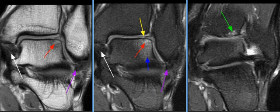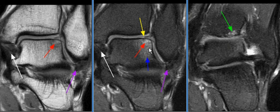MRI examination of the ankle shows an osteochondral lesion of the talar dome, laterally, with overlying cartilage fissure, as seen on this image with a yellow arrow. There is associated perilesional edema.